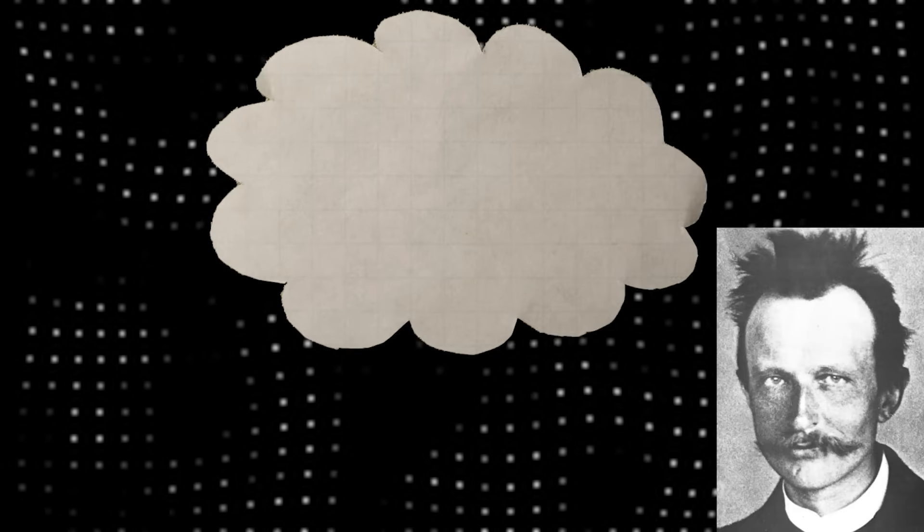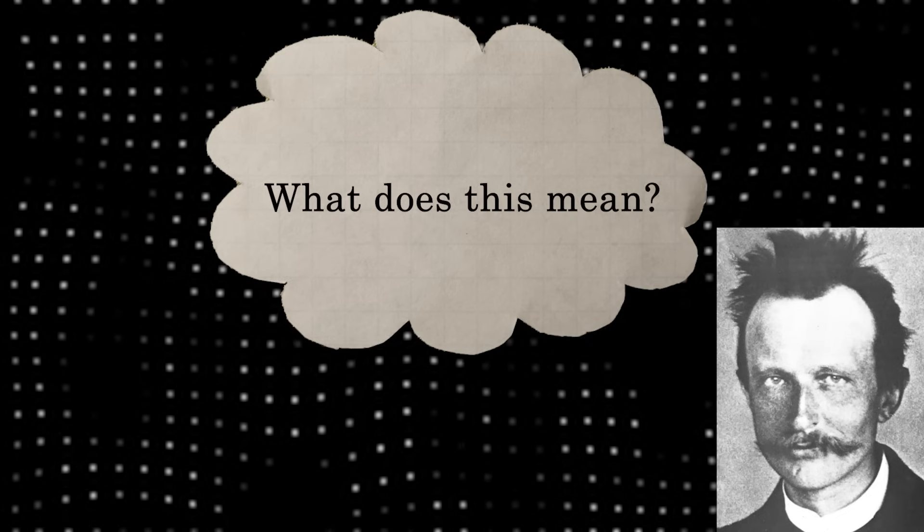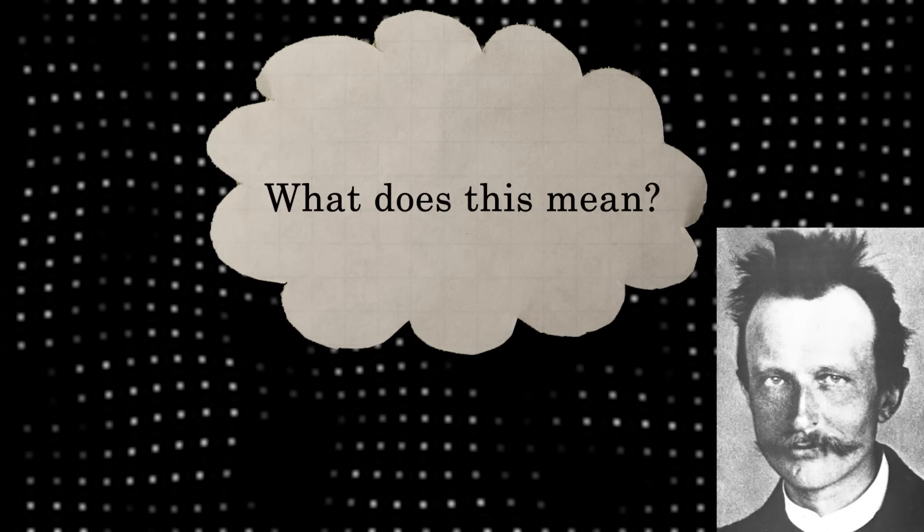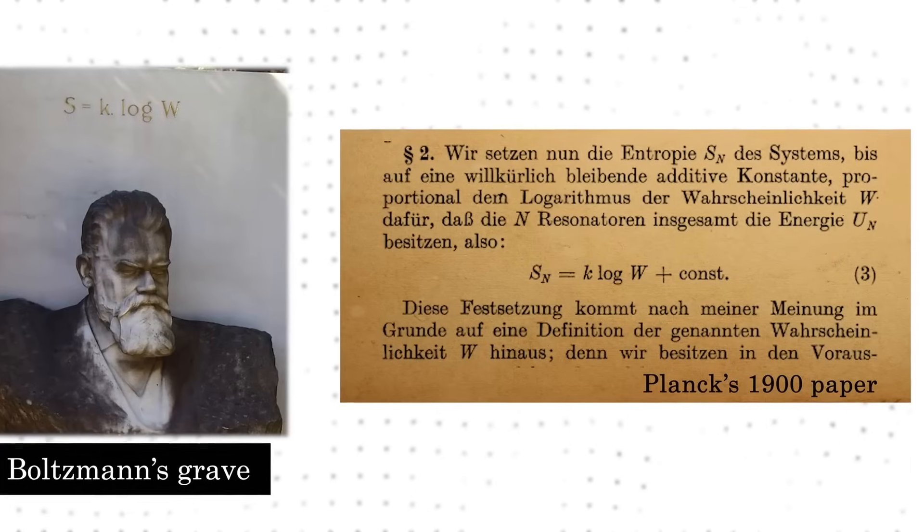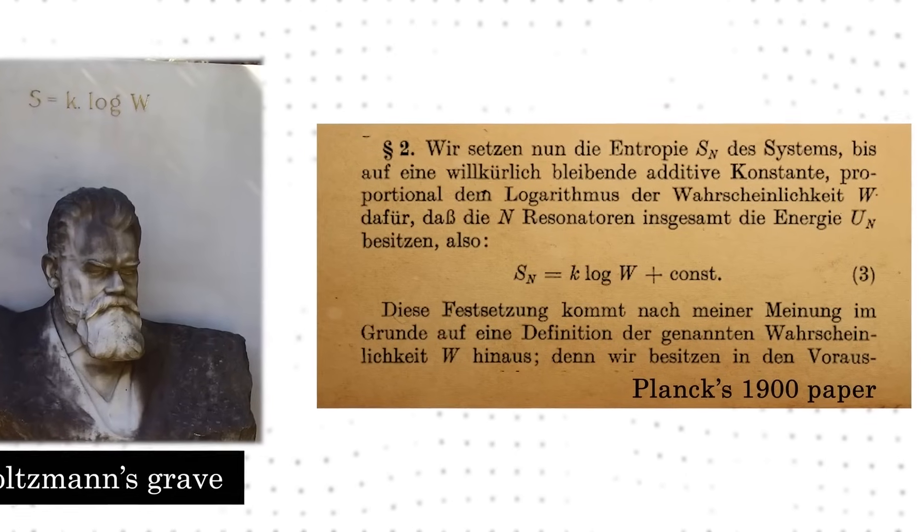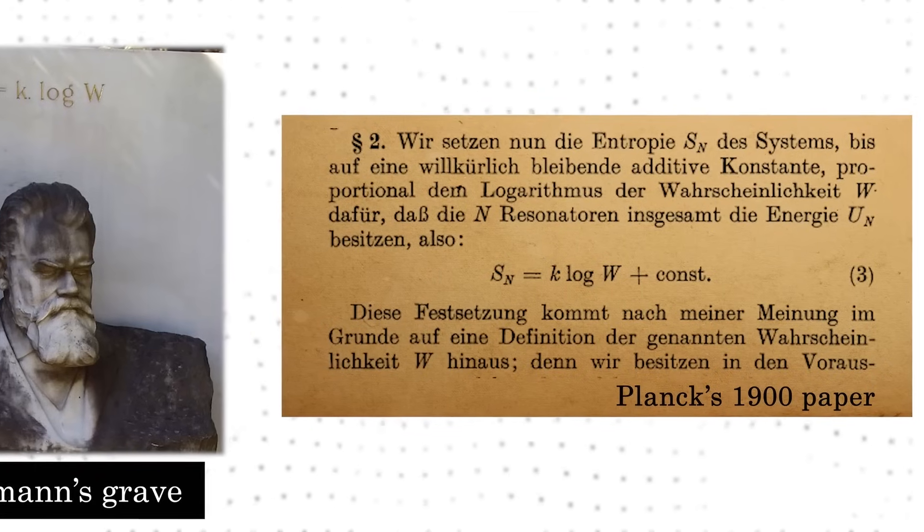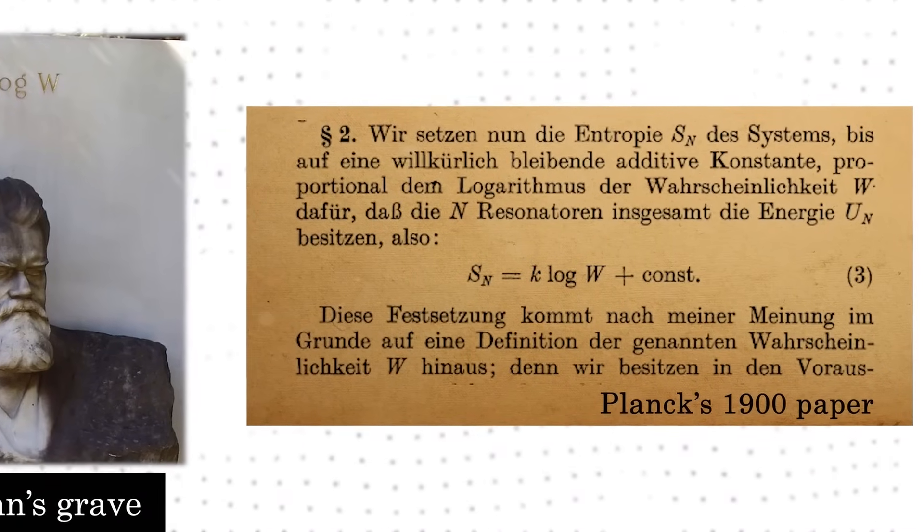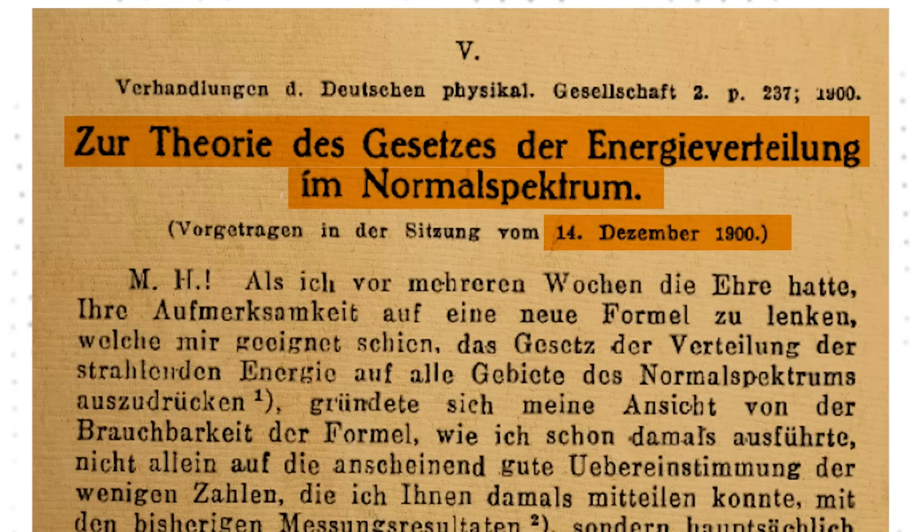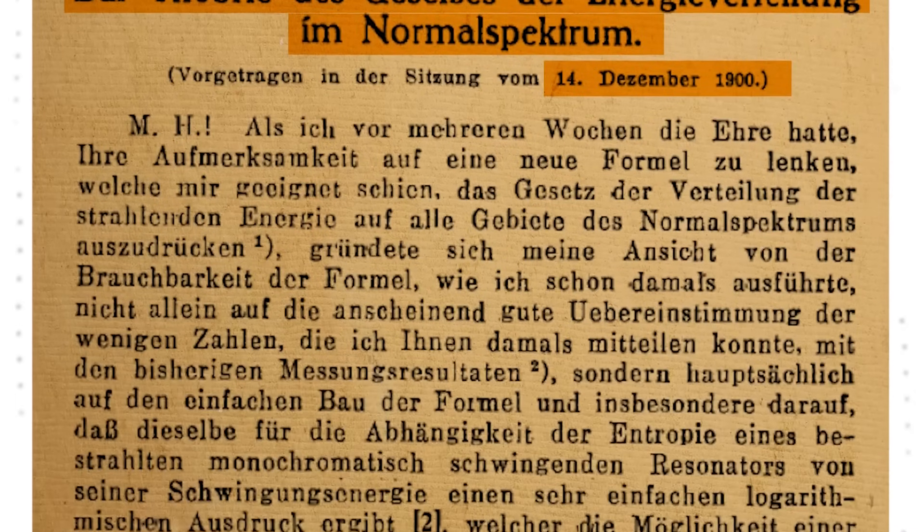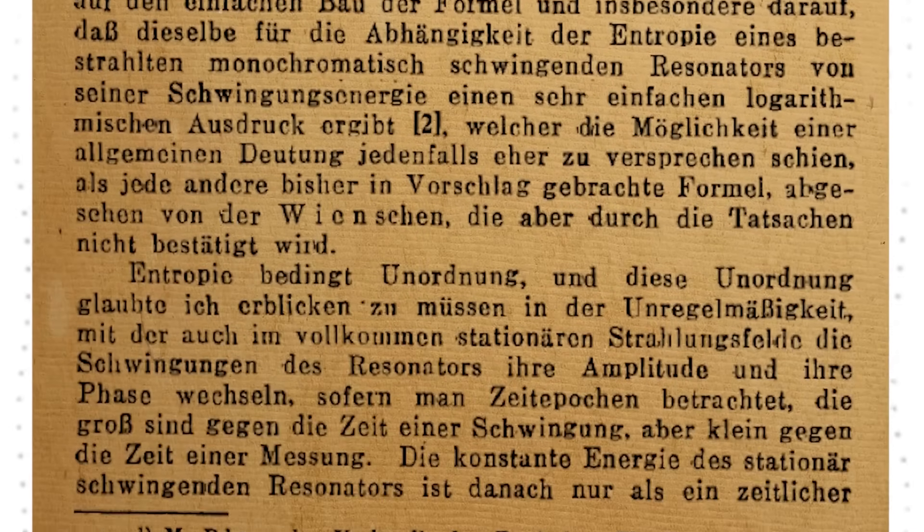This surprisingly good news had Planck desperately searching for some theoretical justification. How to interpret this new entropy expression? Here, things took a very unexpected turn. He turned to Boltzmann's probabilistic notion of entropy, which he had ignored for so long. It was during this period that he stated for the first time what has since become known as the Boltzmann Equation. Yeah, Planck first wrote the equation in Boltzmann's grave. On December 14, 1900, Planck presented his seminal paper to the German Physical Society, introducing the idea of quanta, energy arriving in discrete chunks. Thus, quantum theory was born.